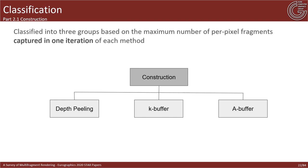The first stage is construction. Without loss of generality, MFR buffer construction techniques can be classified according to the maximum number of per-pixel fragments captured in one iteration. There are three broad categories: depth peeling, k-buffer, and A-buffer methods.